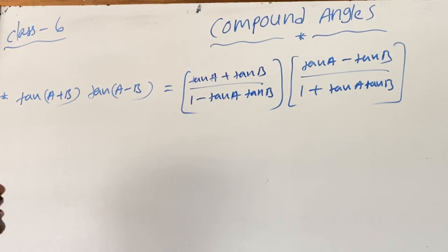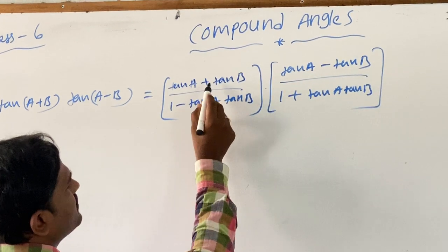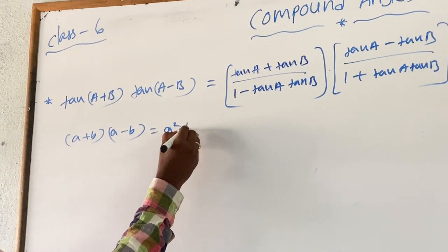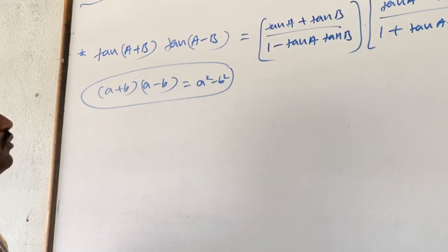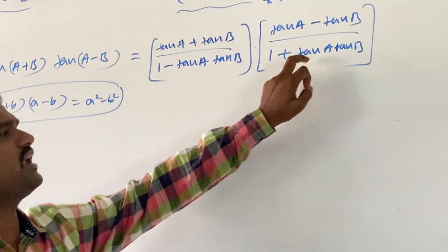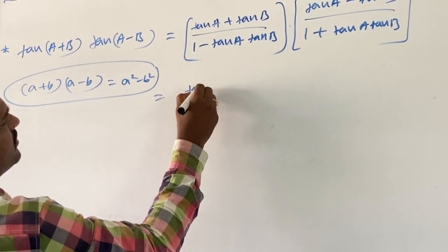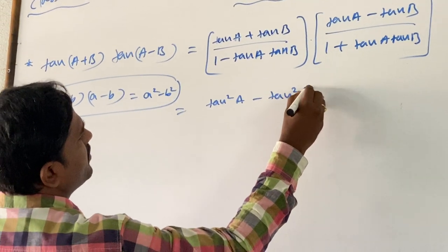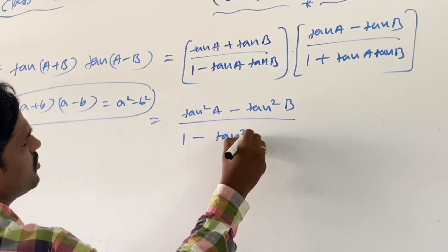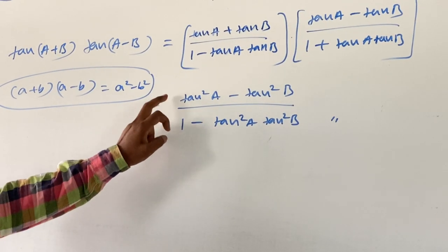Observe the two identities. Both are in the form of (A+B)·(A-B), so the result is A squared minus B squared. In the numerator we have tan A plus tan B and tan A minus tan B — that gives tan²A minus tan²B. In the denominator, 1 minus tan A·tan B and 1 plus tan A·tan B give 1 minus tan²A·tan²B. We cannot simplify it further.